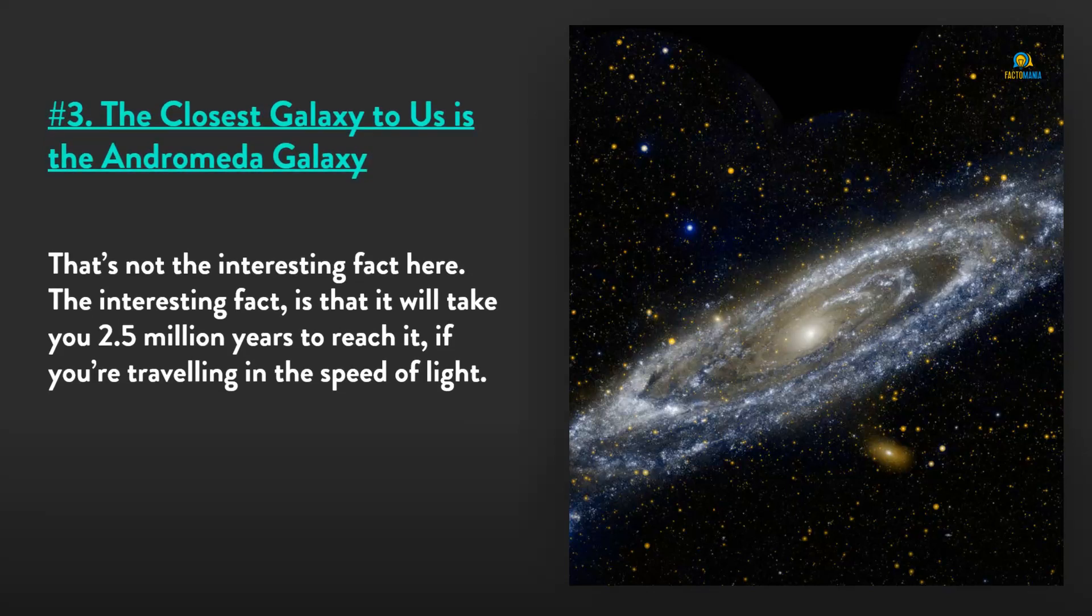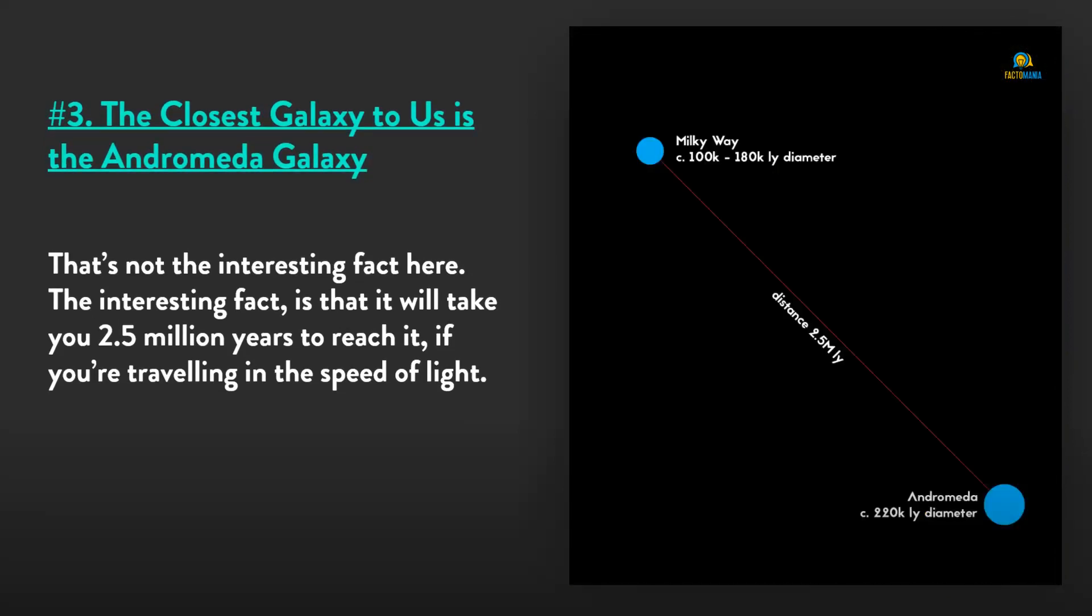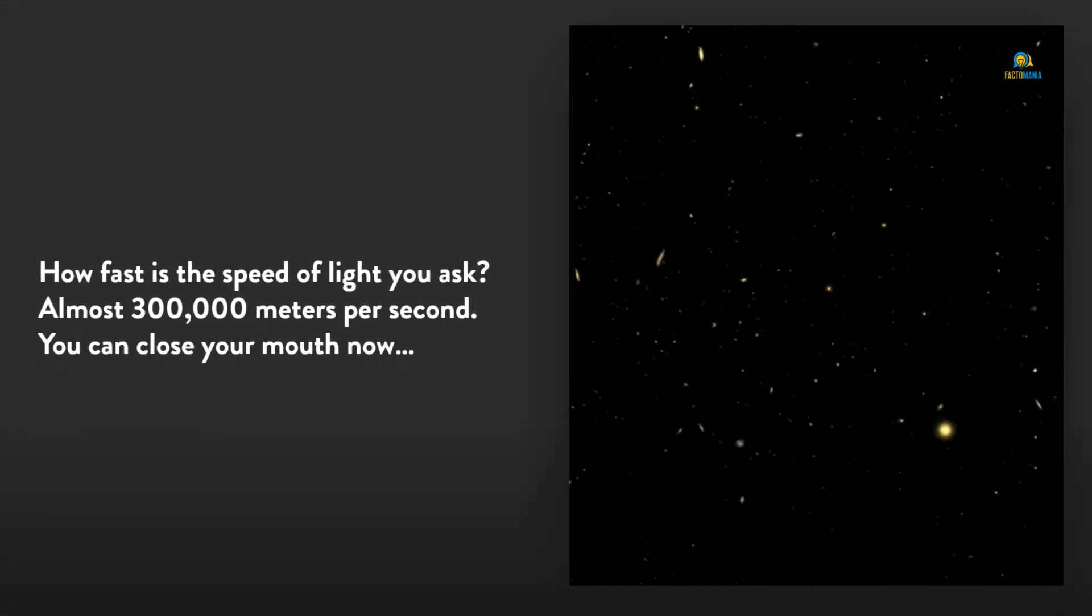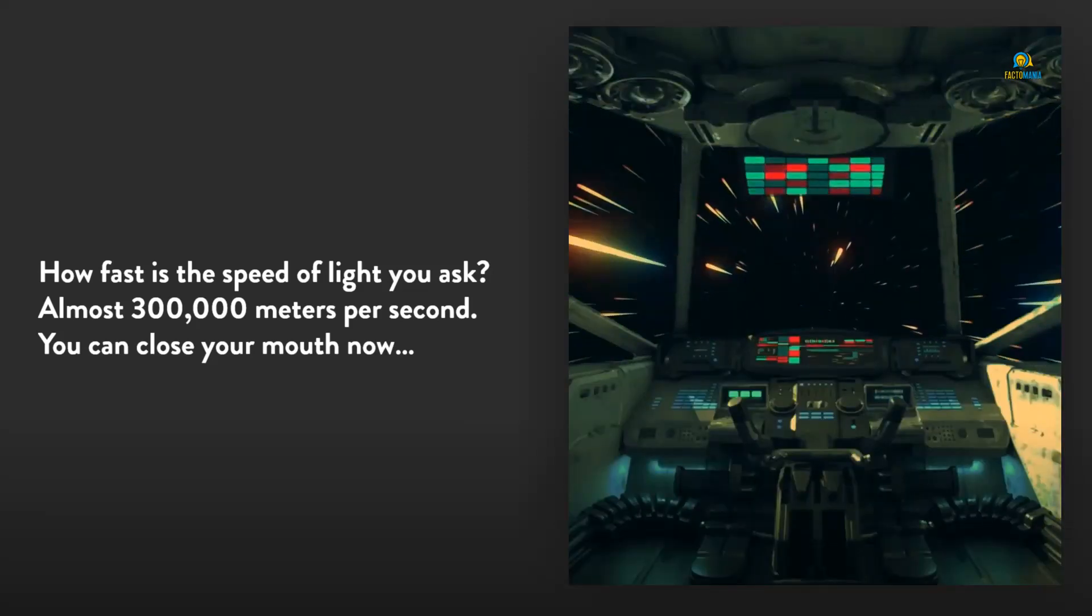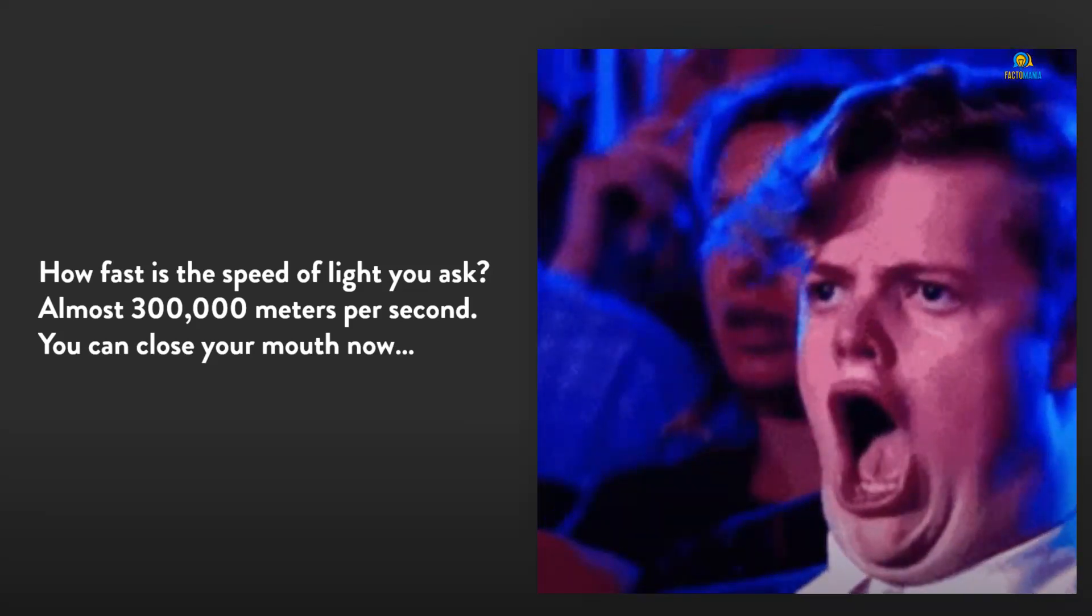Number 3: The closest galaxy to us is the Andromeda galaxy. That's not the interesting fact here. The interesting fact is that it will take you 2.5 million years to reach it if you're traveling at the speed of light. How fast is the speed of light, you ask? Almost 300,000 meters per second. You can close your mouth now.